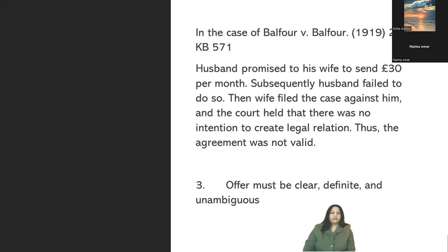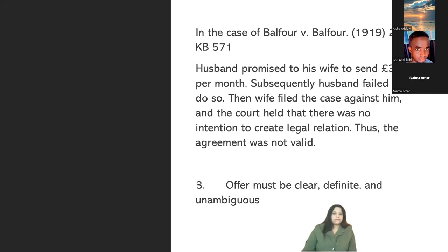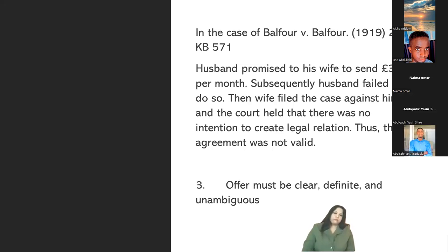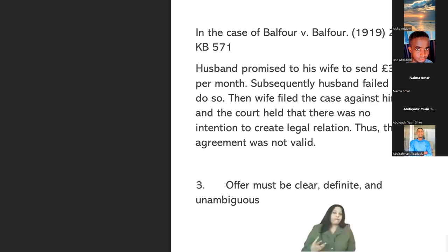Balfour versus Balfour, 1919, 2 KB (King's Bench) 571. In Balfour versus Balfour, what happened was there was a husband — Mr. Balfour — who promised his wife, Mrs. Balfour, to send 30 pounds per month.